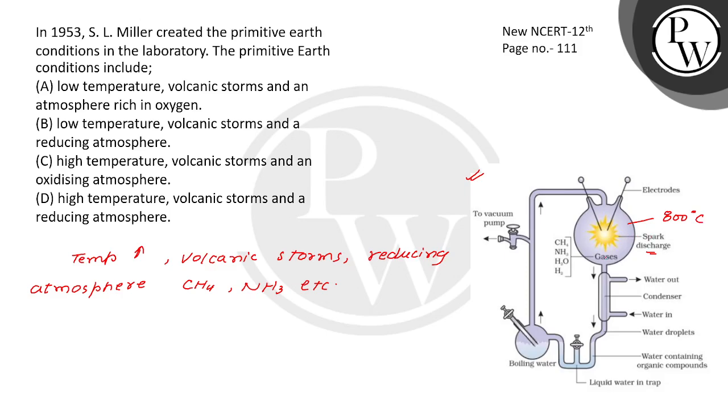After this, what did they see? Here, boiling water, vacuum pumps, electrodes creating spark discharge. And here, a condenser which is cold. Water flows out. And here inside, water droplets, water containing organic compounds, liquid water in the trap, and here, the sample.